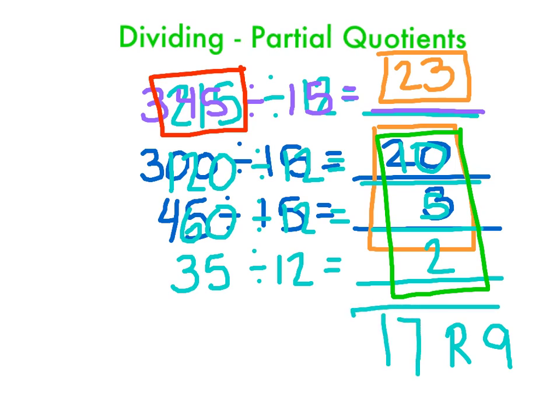So if I did everything correctly, I should have 17 remainder 9. Double check me, I could have gotten it wrong. I hope this helps you tonight.